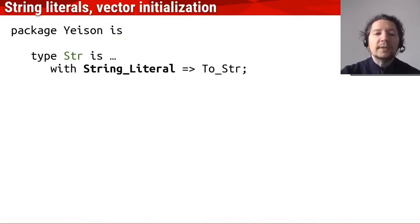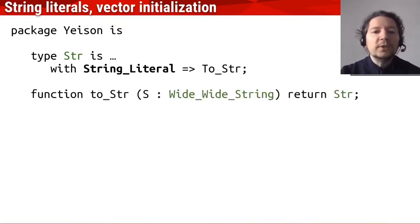And the first one is that for any type, you can specify this string literal aspect, which in turn binds a function with the initialization, in the sense that you will get a call to the specified function with a wide-wide string, that is any Unicode string, and then, and there you can convert it to your type internal information.